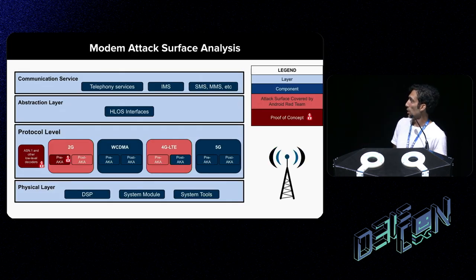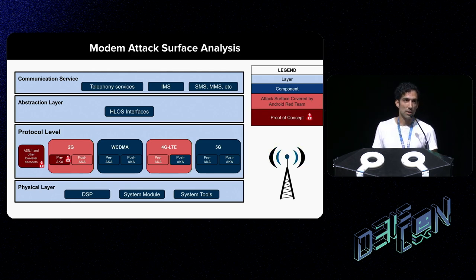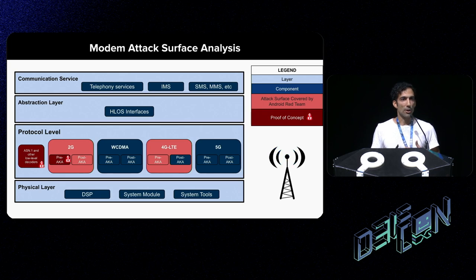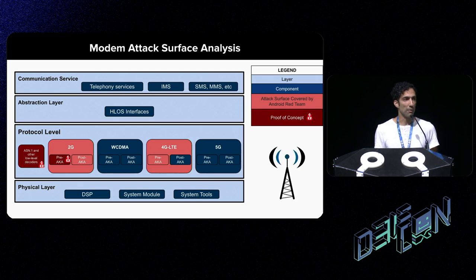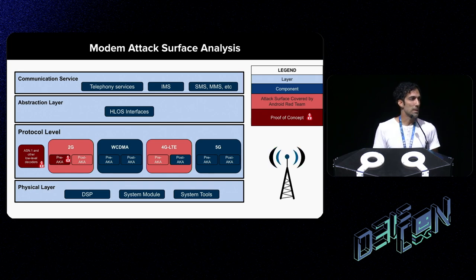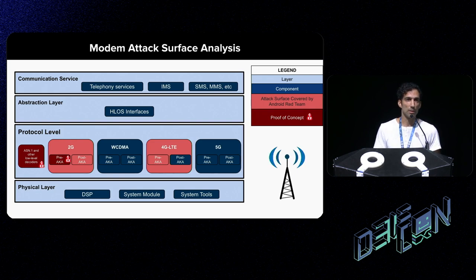Here's a quick visual of our attack surface analysis of the modem. Everything in blue represents the different layers and components, from the communication layer down to the physical layer. Stuff in red is what we targeted during our red team engagement. Dark red is what we were actually able to exploit — specifically the pre-authentication attack surface in 2G, as well as some low-level decoders such as ASN.1.